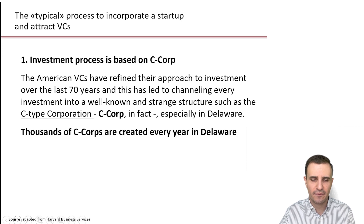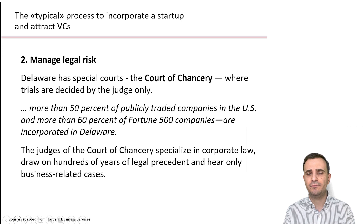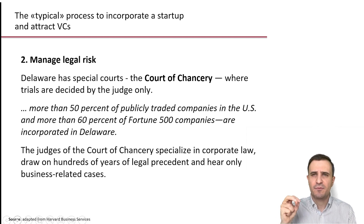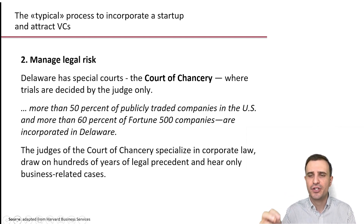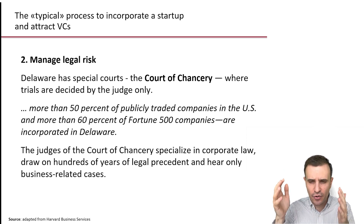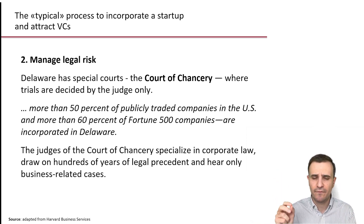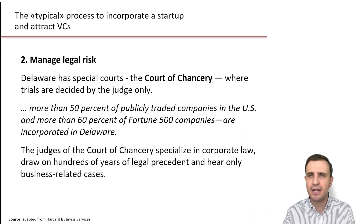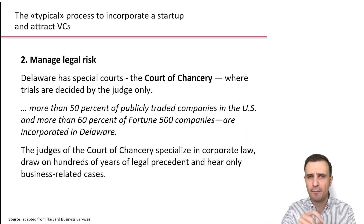Delaware is essentially the tax haven of the United States. When you hear the American government complaining about global tax havens with very low tax rates, it's because the US has its own tax haven within the country — Delaware — and of course they don't like competition from other tax havens. One very strong point is the great expertise of Delaware, and specifically its Court of Chancery, on corporate matters — hundreds of legal precedents on corporations. More than 50% of publicly trading companies in the US, and more than 60% of Fortune 500 companies, are incorporated in Delaware.